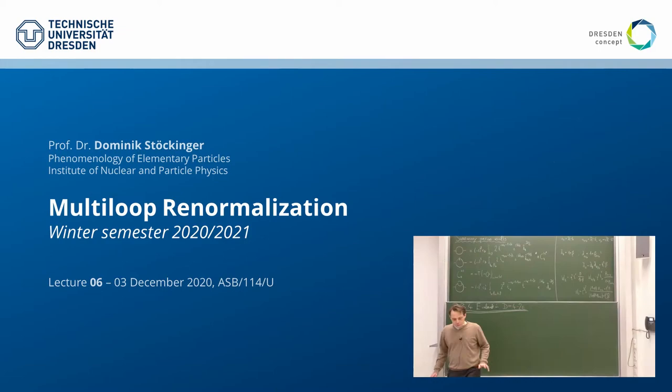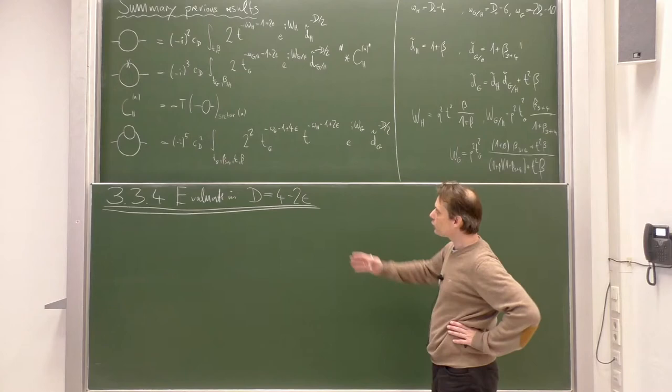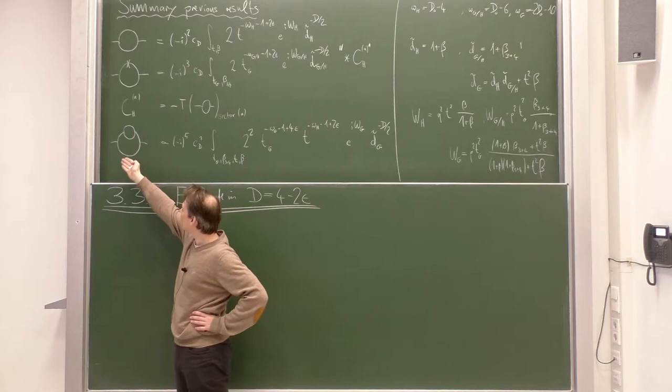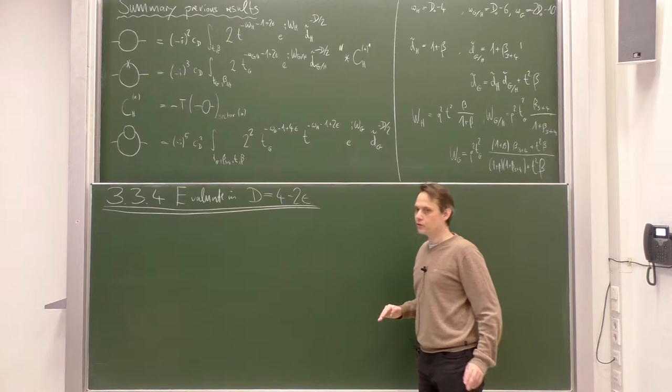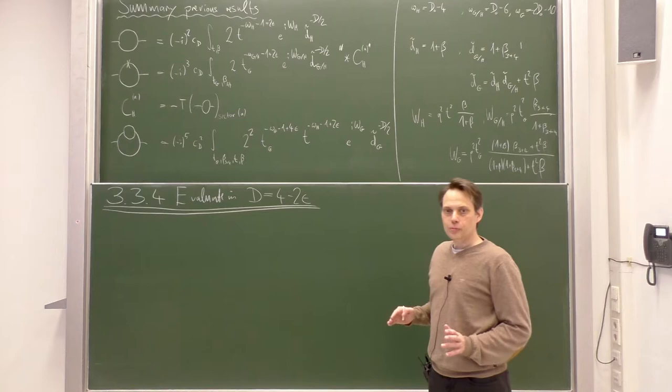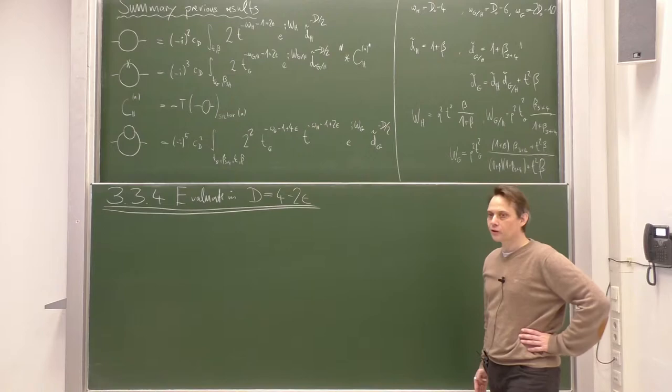Let us begin with our lecture today. Here on the blackboard I summarize the results of our previous calculation. We are in the middle of calculating an example at the two-loop level and want to evaluate a two-loop Feynman diagram — the usual self-energy with a one-loop insertion — together with the associated counterterm diagrams. We want to do everything in terms of alpha parameters in the appropriate sectors using the beta and t variables introduced according to a labeled forest.